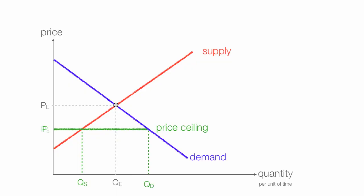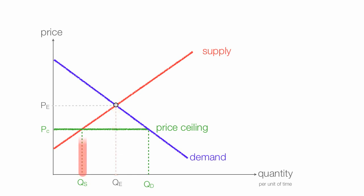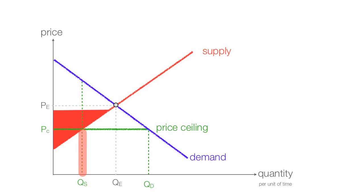Now I'm going to talk about what happens to consumer and producer surplus with a price ceiling. This yellow triangle used to be consumer surplus before the price ceiling. What has happened is the quantity supplied and demanded at equilibrium was there, and now quantity supplied is less. Producer surplus used to be the red area, but it's shrunk to a small triangle because less is being supplied at a lower price.